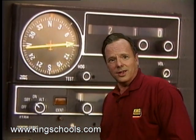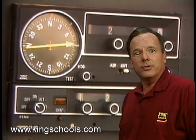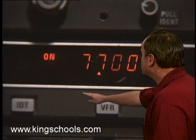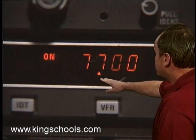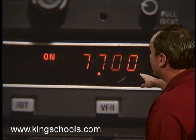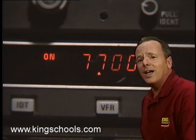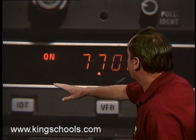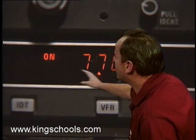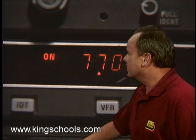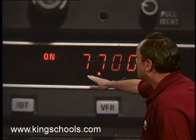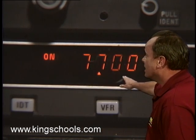Now, there are other things you can put in your transponder. For instance, you might squawk 7-7-0-0 — 7700 — and that is the emergency squawk. That tells them you have a problem; bells go off, and everybody's going to stand by to help you. So the emergency squawk is 7700.